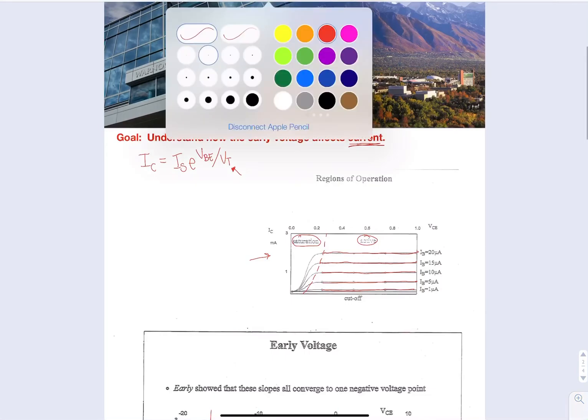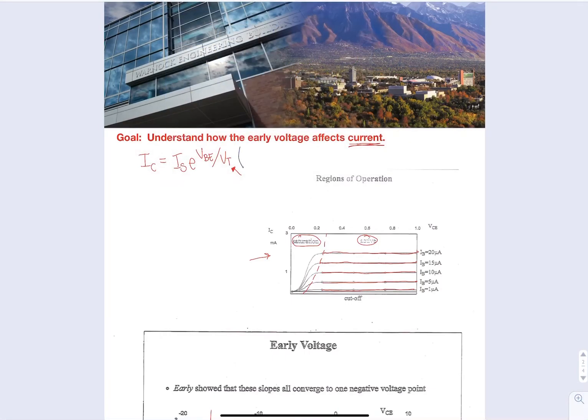And so in our current equation here, it is actually 1 plus VCE over VA, where now the function of current is not just a factor of the base, but it will also be a factor of the collector.